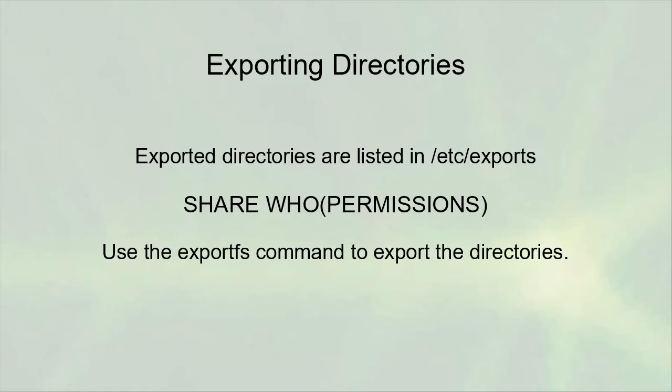The NFS server needs a list of directories it's exporting, defined in the /etc/exports file. The basic format is the share name (the directory path to export), followed by who you're exporting to — a star for everybody — and then permissions inside parentheses: 'ro' for read-only, 'rw' for read-write, or other options. Once configured, run 'exportfs -a' to export all shares, or 'exportfs' by itself to list currently exported directories.